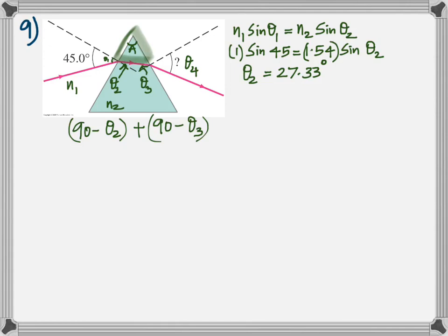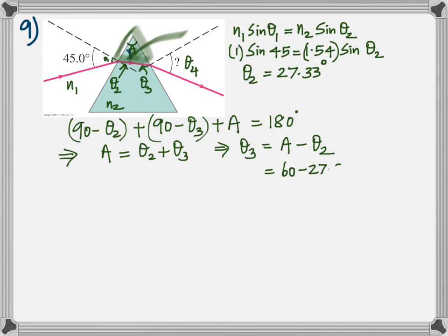All right, I'm talking about this angle. It's 90 minus theta 2. Similarly on the other side, it's 90 minus theta 3 plus A. Sum of the angles of a triangle is 180. Well, you get 180 on both sides, so you come up with theta 2 plus theta 3 is A, from which you can find theta 3.